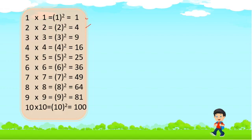We can define the square of a number as the product of the number with the number itself. So the square of 1, that is 1², is equal to 1; the square of 2, that is 2², is equal to 4; the square of 3, that is 3², is equal to 9, and so on.